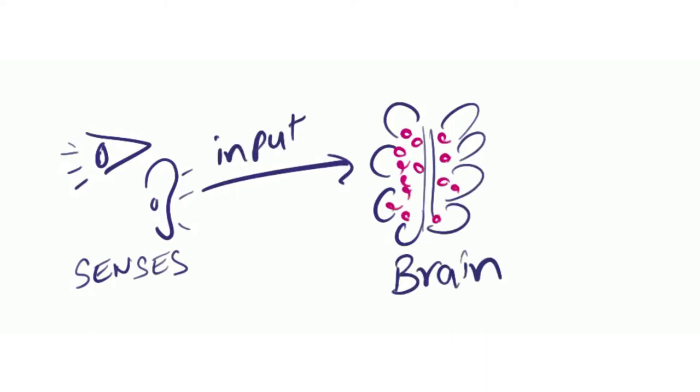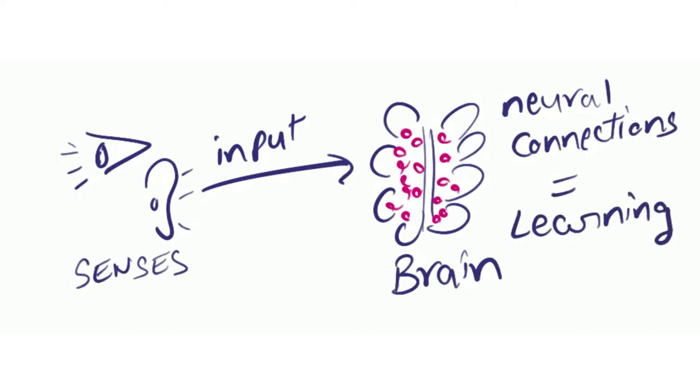Your five senses are constantly giving input to your brain. This incoming information keeps getting stored in your brain in the form of neural connections. A chain of specific neurons that are interconnected is called a neural pathway.